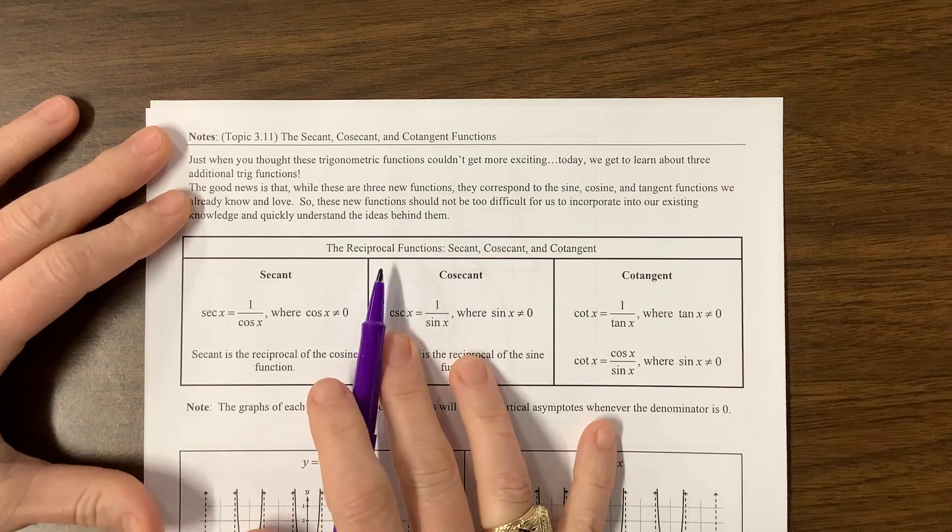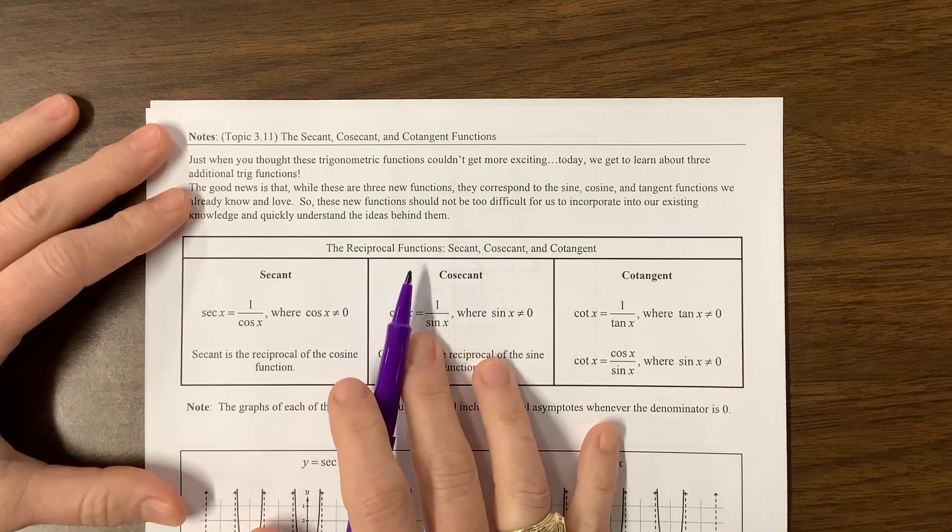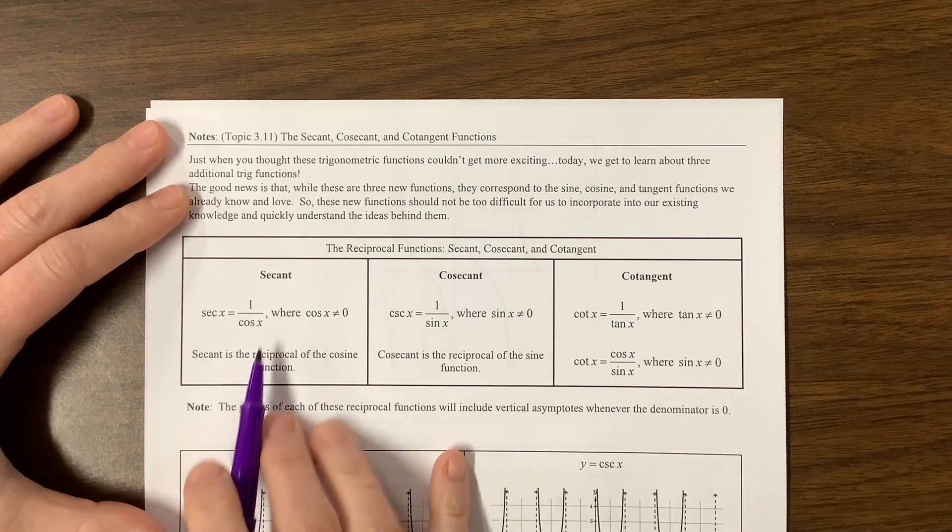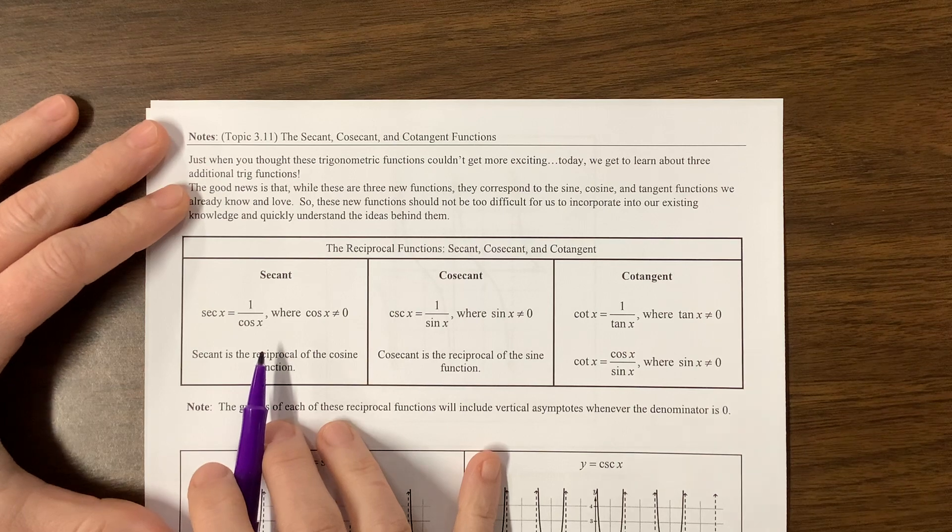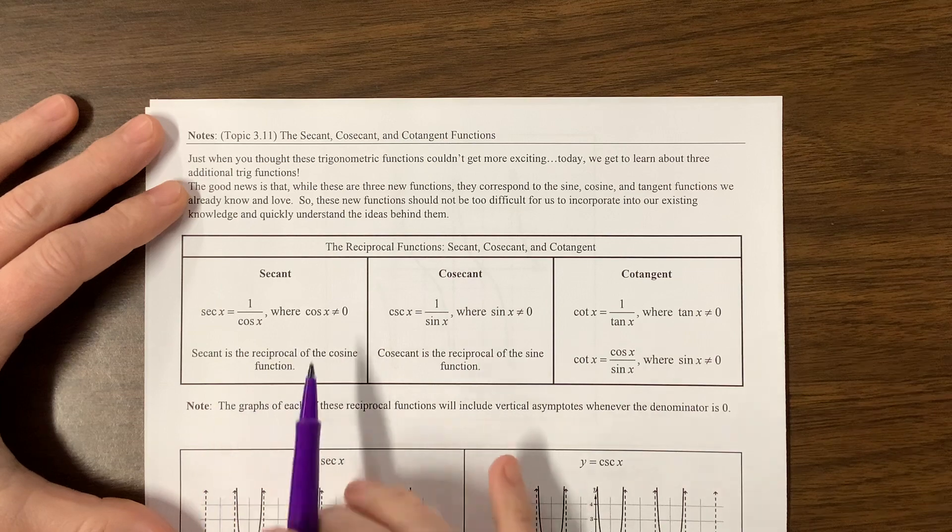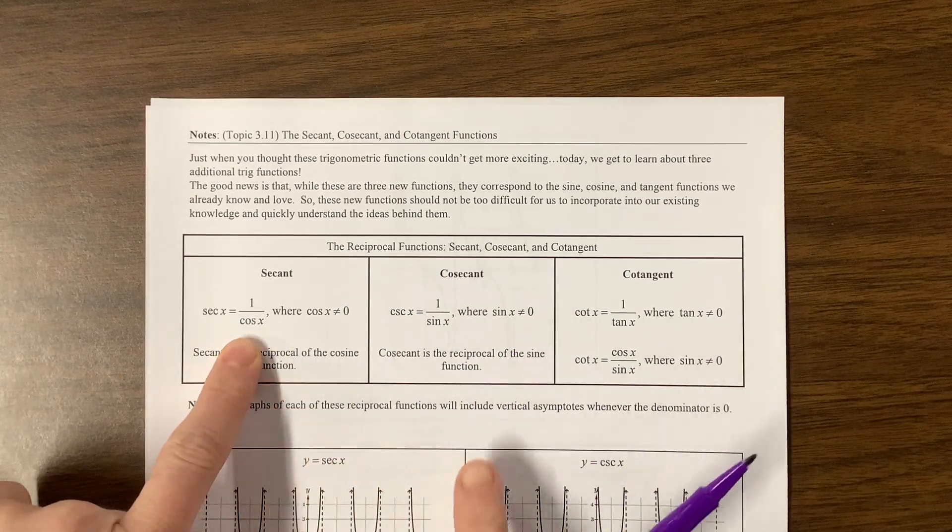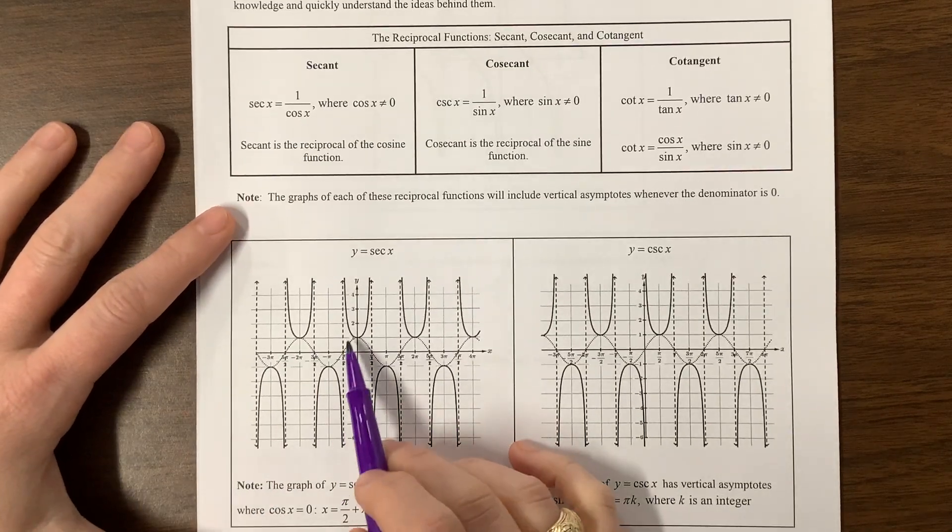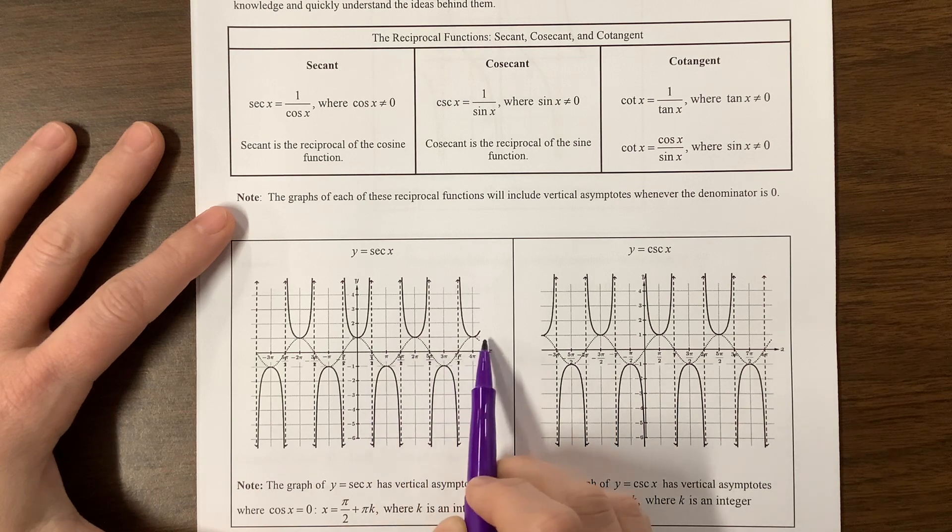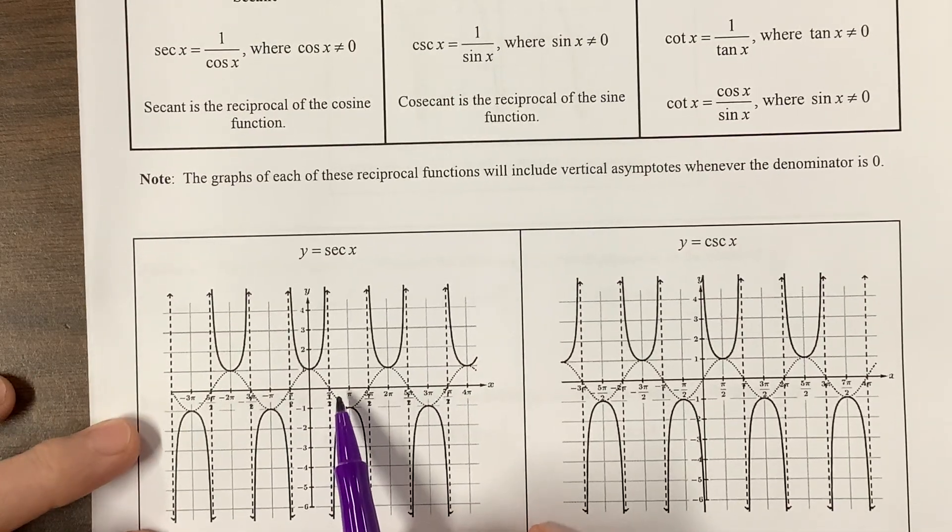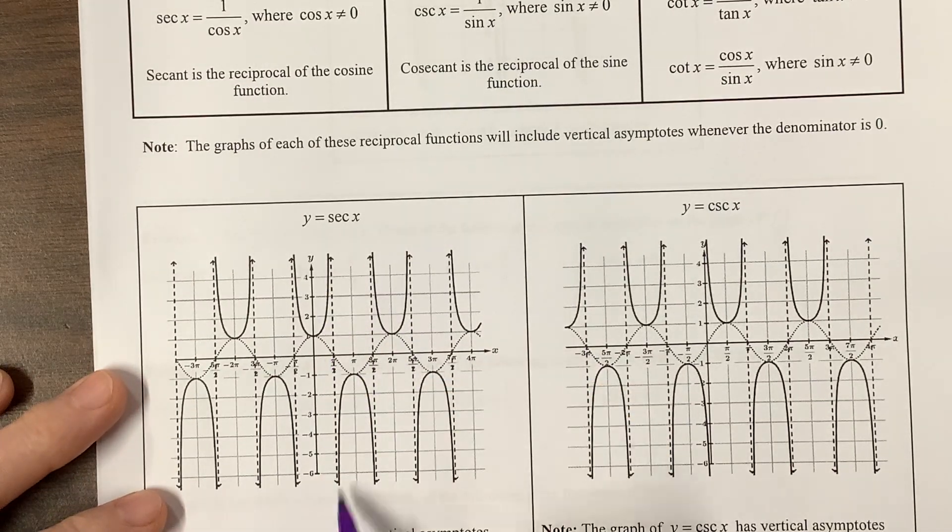To begin with, we can talk about the reciprocal and the quotient functions. The reciprocal identities are: secant is the reciprocal of cosine, so secant is defined to be 1 over cosine of x, where cosine of x is not equal to 0. We end up getting asymptotes anywhere that cosine would be equal to 0.